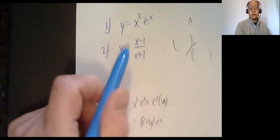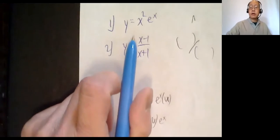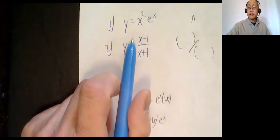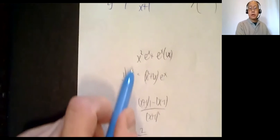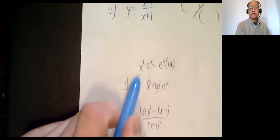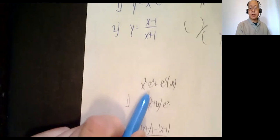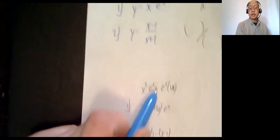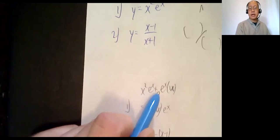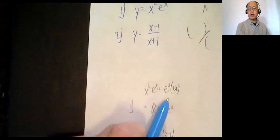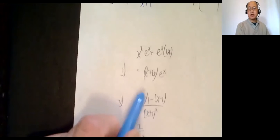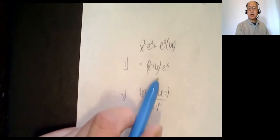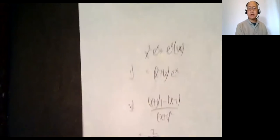Yesterday in class: derivative of x squared e to the x — product rule. So first times the derivative of the second; the derivative of the second is e to the x, plus e to the x times the derivative of the first, which is 2x. Factor out e to the x: x squared plus 2x, times e to the x.